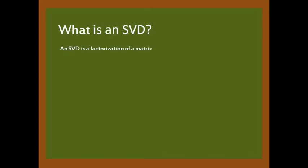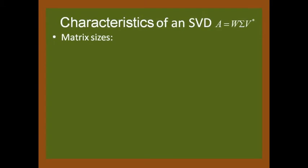What is an SVD? An SVD is a factorization of a matrix into a product of matrices. Let's look at interesting properties such as matrix sizes. It's interesting to note that A does not have to be square. Here, A is generalized as an m-by-n matrix.